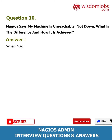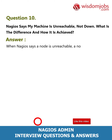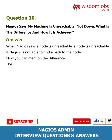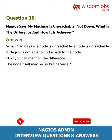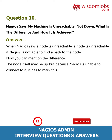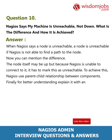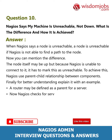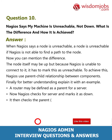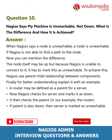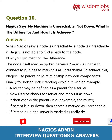Question 10: Nagios says my machine is unreachable, not down. What is the difference and how is it achieved? Answer: When Nagios says a node is unreachable, it means Nagios is not able to find a path to the node. The node itself may be up, but because Nagios is unable to connect to it, it marks it as unreachable. To achieve this, Nagios uses a parent-child relationship between components. For example, a router may be defined as a parent for a server. If Nagios checks the server and marks it as down, it then checks the parent router. If the parent is also down, the server is marked as unreachable. If the parent is up, the server is marked as really down.